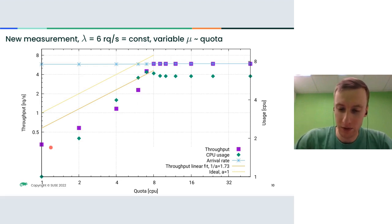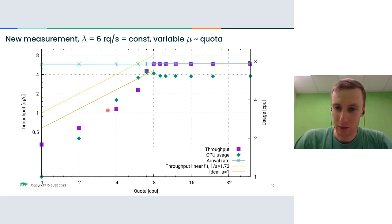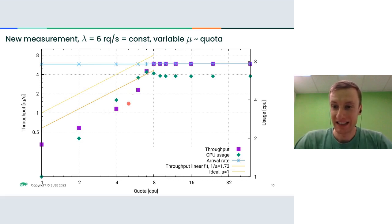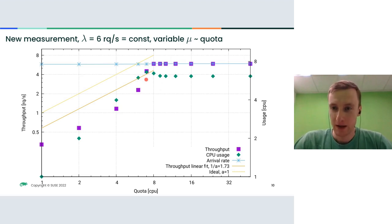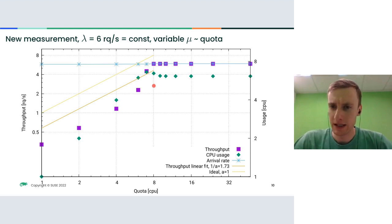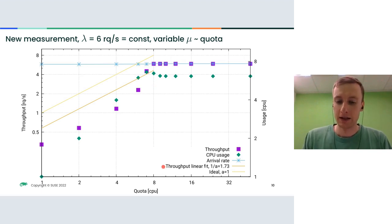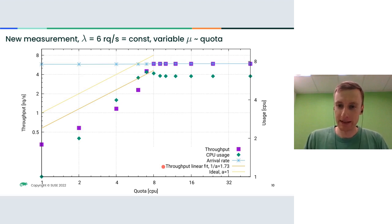The experimental measurement confirmed this: reducing the arrival rate to enter the relevant zone showed sublinear throughput drop at first, then linear. CPU usage did rise slightly around the critical quota value — from about 6.2 to a peak of 6.6, measurable but not large. The key takeaway is that applying quota to a spin lock workload can have various non-trivial effects depending on the number of CPUs and arrival rate.